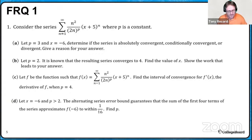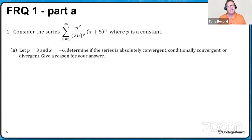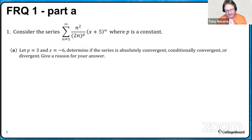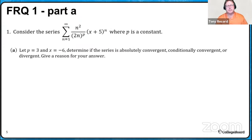So what are we going to start with? I'm going to do parts A and B of this problem. Part A says we're going to let p equal 3 and let x equal negative 6. We need to determine if this series is absolutely convergent, conditionally convergent, or divergent, and give a reason for our answer, showing work that will substantiate those findings.